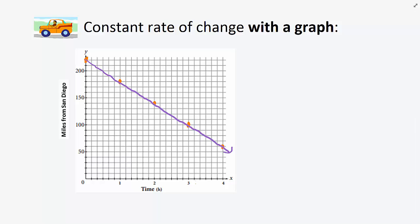Notice that to get to the next point on the graph, we move down 40 units on the y-axis and one unit right.